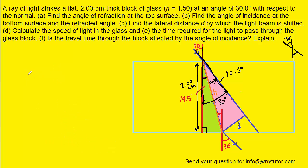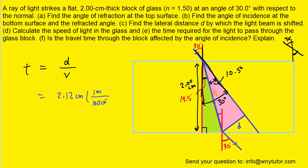For part E — the time required for the light to pass through the glass block — time equals distance divided by speed. The light travels through the block along the path we marked H, which we found to be 2.12 centimeters. Converting to meters and dividing by the speed of 2 times 10 to the eighth meters per second gives 1.06 times 10 to the minus 10 seconds — the correct answer to part E.